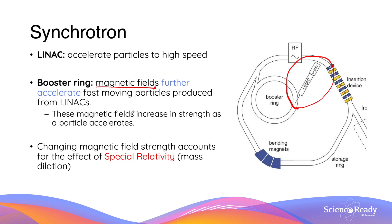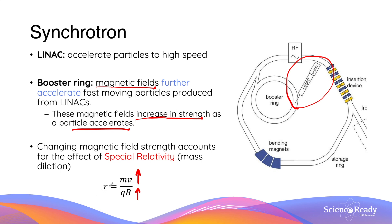The reason it's called a synchrotron is because the magnetic field strength of the magnets in the booster ring can increase in strength accordingly as the particle accelerates. The radius of circular motion depends on mass times velocity divided by charge and magnetic field strength. As the velocity of the particle increases, the synchrotron ramps up its magnetic field strength such that the radius of circular motion remains the same, allowing the particle to go around the booster ring many times per second and reach high speed in a very short duration of time.